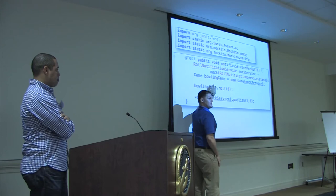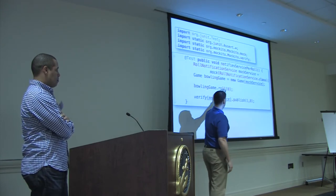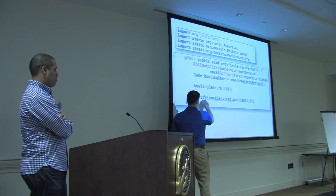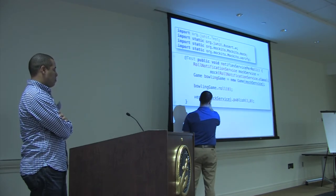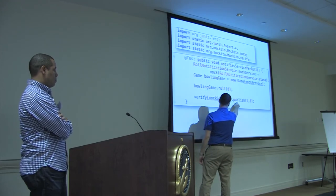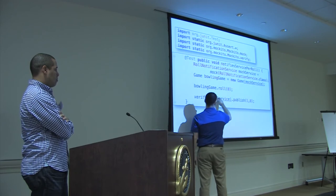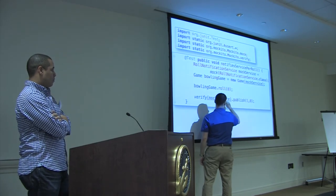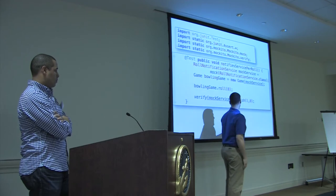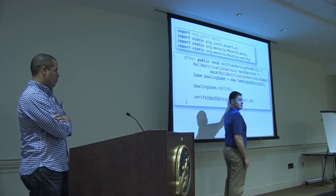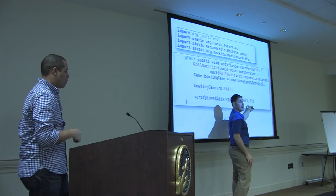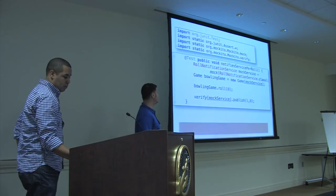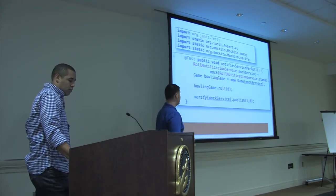This is the actual thing we're testing: we want to notify on a roll. So when we call roll on our game, we want to ensure the service got notified. Mockito provides a very readable verify interface. We verify that the publish method — defined by the interface — was called on the mock service with the correct data. So we're actually testing two things: that publish was called on the external dependency, and that it was called with the correct parameters. This test is obviously going to fail first — it fails at compilation and in execution.